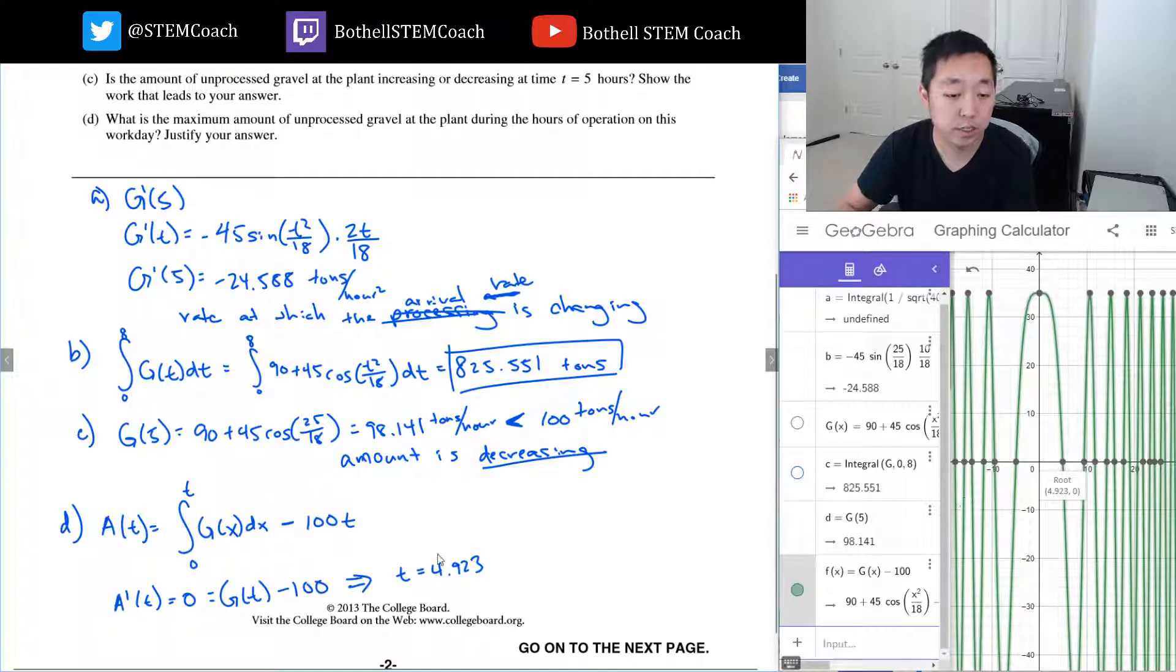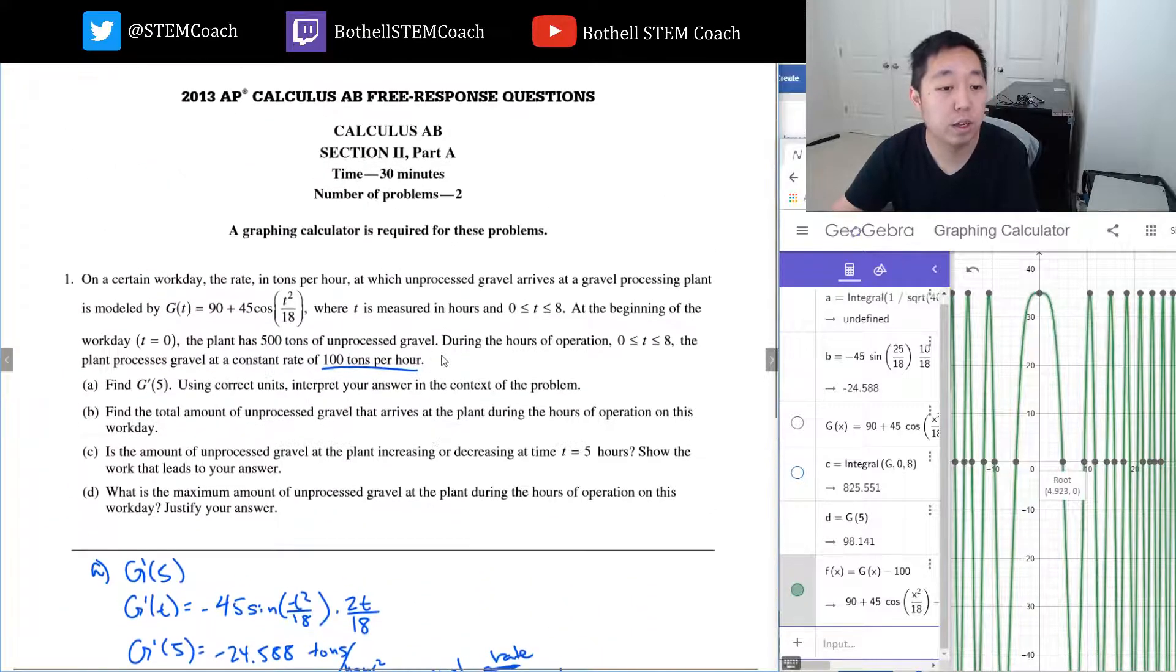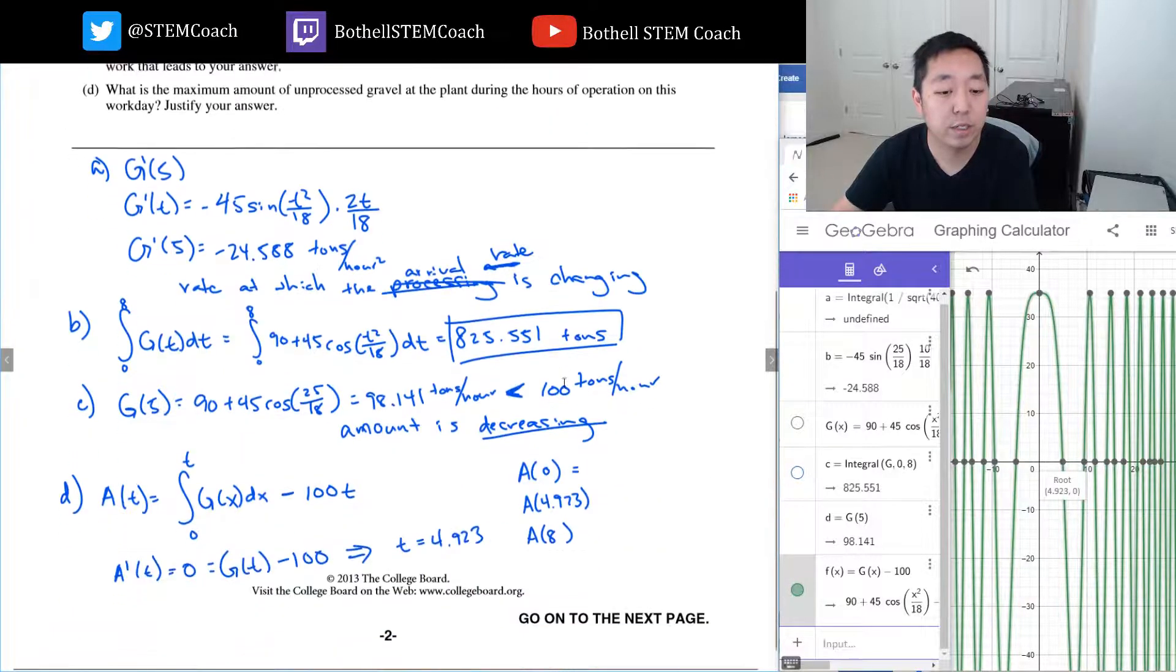And that happens, by my calculator, at t equals 4.923. Now between zero and eight hours, that's the only time it crosses there, so that's the one I got to check. So now I want to check A(0), A(4.923), and A(8). The zero and eight are the end bounds, and then this is my local maximum, so I got to see which one's the largest.